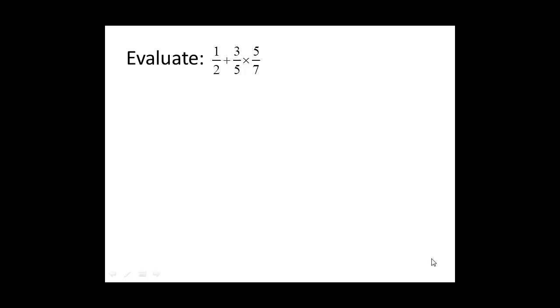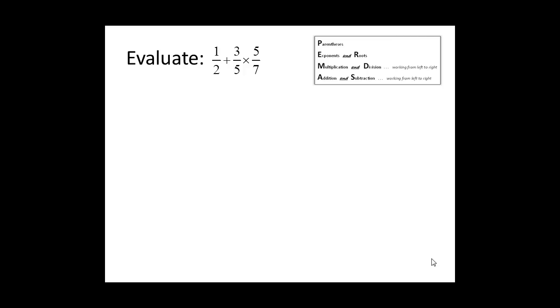Evaluate one-half plus three-fifths times five-sevenths. We will remember our order of operations. Parentheses come first, then exponents and roots, then multiplication and division from left to right, and addition and subtraction working from left to right.